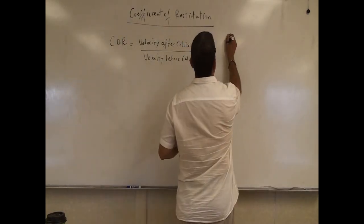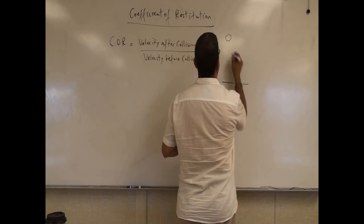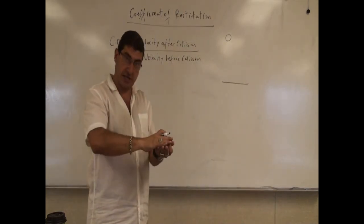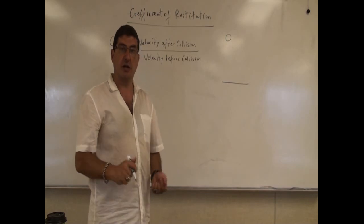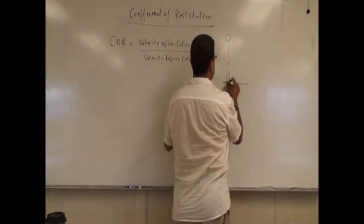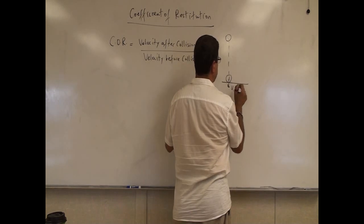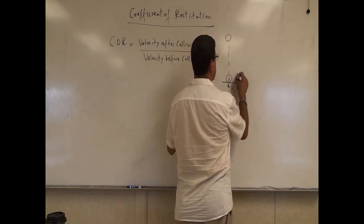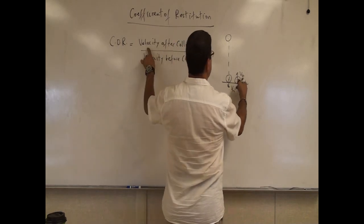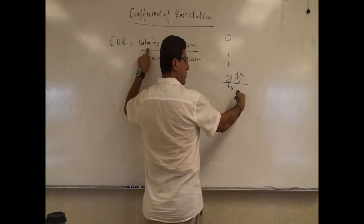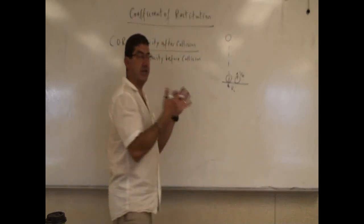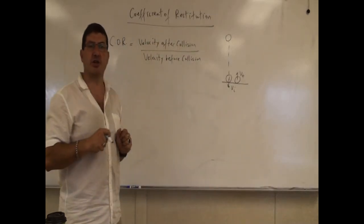To do a simple experiment, you can take a ball of a certain material, drop it on another object like a table or the ground, and determine the velocity just before collision — v initial — and then the velocity after collision — v final. If you take the ratio of v final after collision divided by the velocity before the collision, you get the coefficient of restitution.